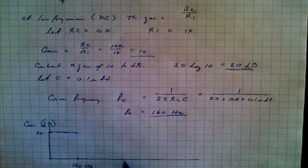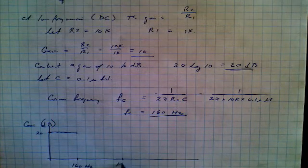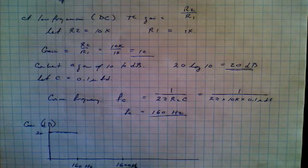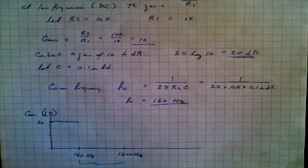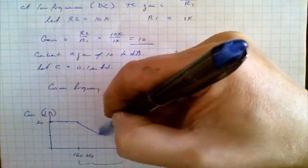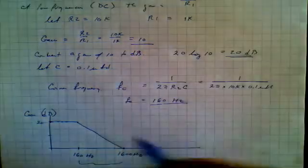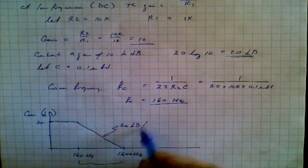So if we went one decade up, one decade would be 10 times this number. So it would be 1600 hertz. There we go. One decade. The characteristic would roll off like this. 20 dB per decade.